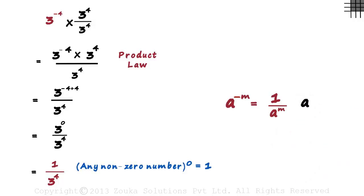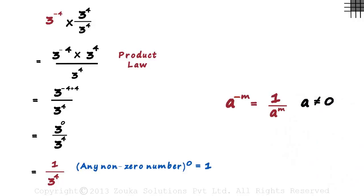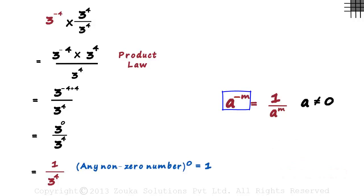Where a is not equal to 0. Because if a is equal to 0, then we would have 0 in the denominator, which would make it indeterminate. This term is read as a raised to negative power m.